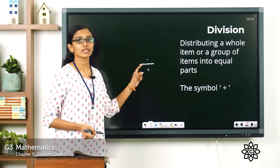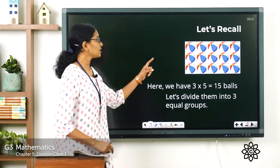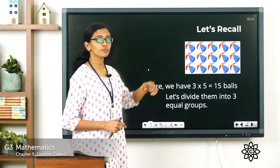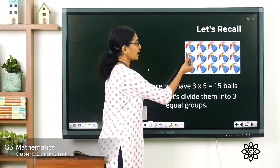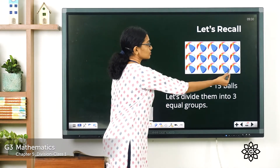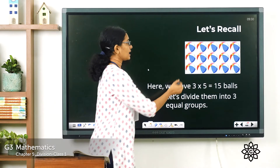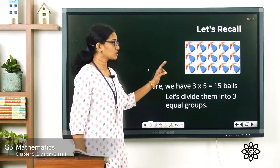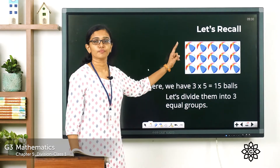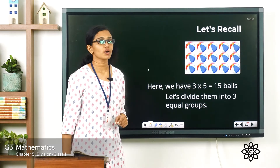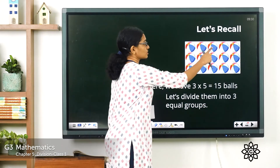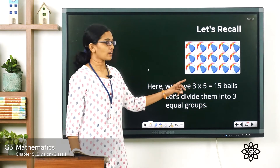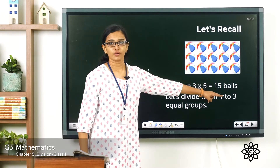This is the symbol we use in division. Look at this picture — do you see balls here? How many balls are given here? There are 3 rows and 5 columns of balls given here. So what is the total number of balls? 3 multiplied by 5 is equal to 15 balls.